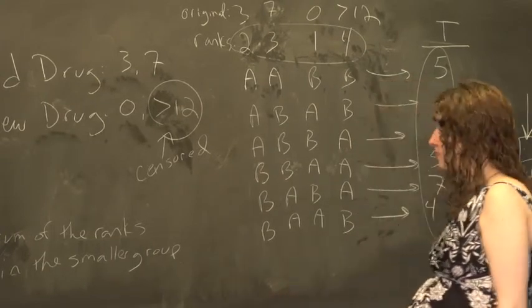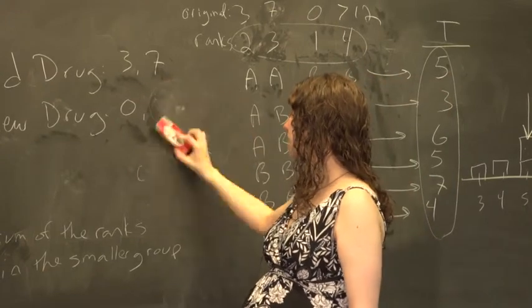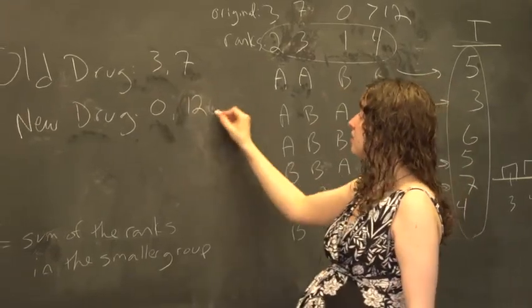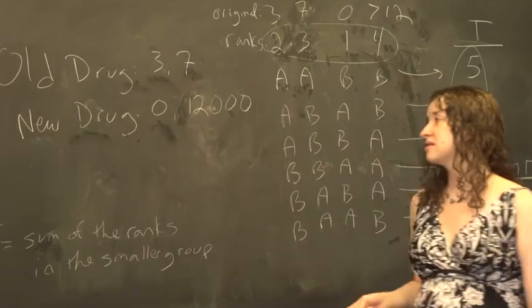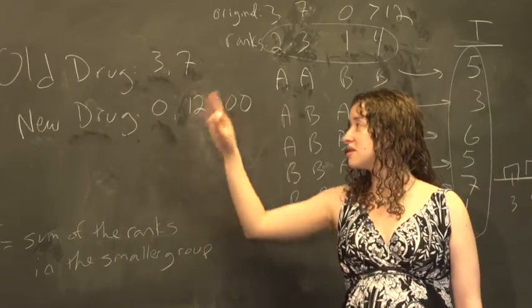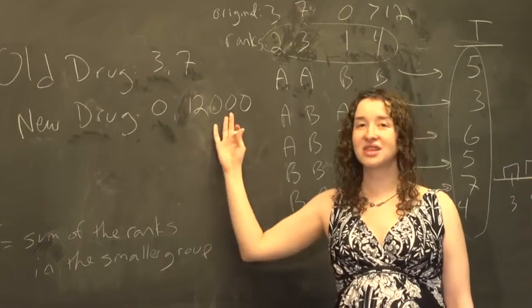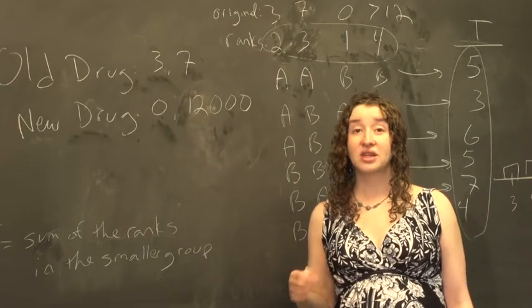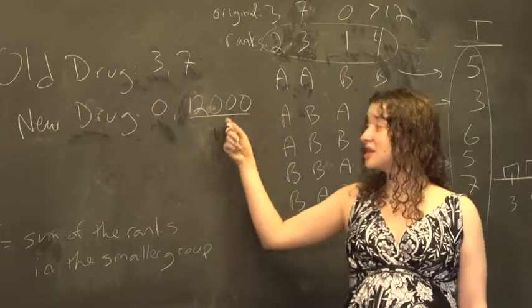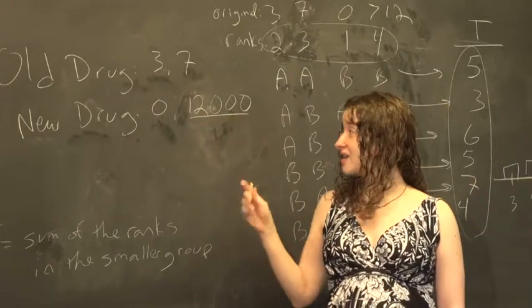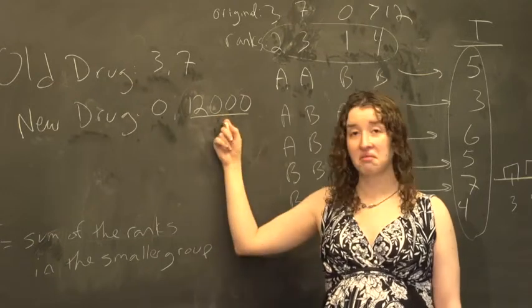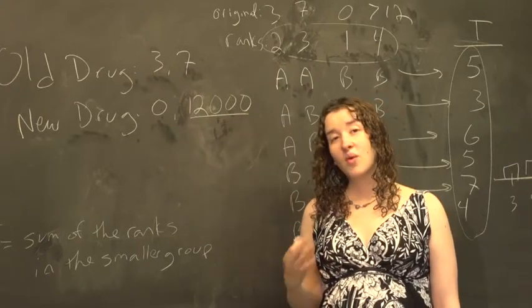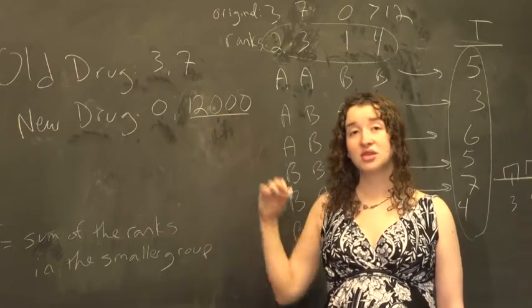When else would the rank sum test be useful? Suppose we didn't have censoring, but that instead of a 12 there, we had a 12,000. Maybe these aren't months lived anymore, but regardless, our data set could look like this. We could have a 3 and 7 in one group, and a 0 and a 12,000 in the other group. Any answer we get, if we just do a straightforward randomization test, is going to be completely driven by this huge outlier. If I take the average or the sum of this number with anything else, it's pretty much going to be right back to this number. This number will completely drive our results. We don't want our answers to be completely driven by some huge outlier.